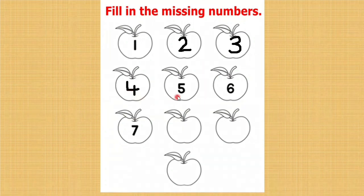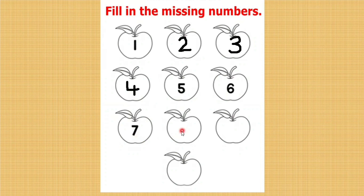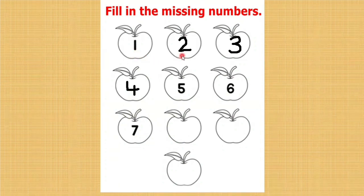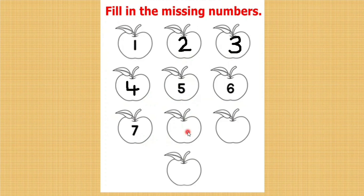After 4, 5. After 5, 6. After 6, 7. After 7, the number is missing. What comes after 7? To do this, you have to keep 7 in your mind and do the forward counting from 1. 1, 2, 3, 4, 5, 6, 7, 8. What comes after 7? 8. Let us write. After 7, 8 will come.